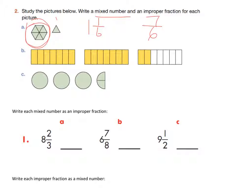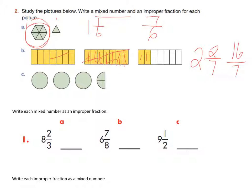Go ahead and do B and C — mixed and improper — if you haven't already. Alright, let's check B. I have two complete wholes and two left over, out of sevenths — one whole section has seven pieces. So two complete wholes and two-sevenths. Two groups of seven is 14, plus 15, 16 — so 16 sevenths would be my improper fraction.